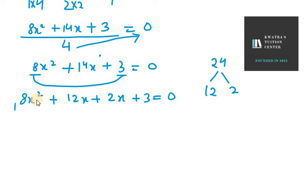Now, in this case, what we can take common is 4x and we are left with 2x plus 3. And again in the last two terms, we are left with 2x plus 3.